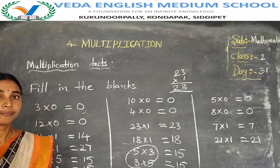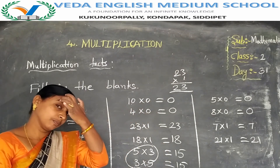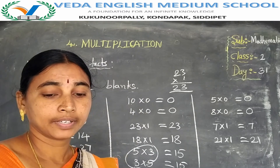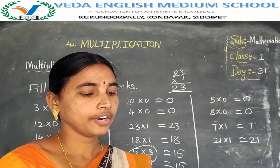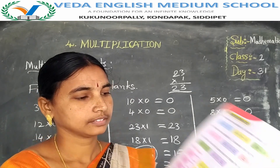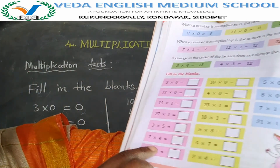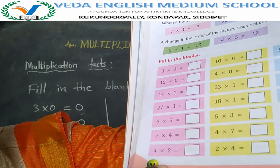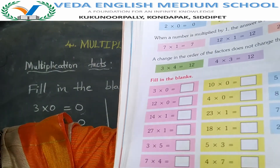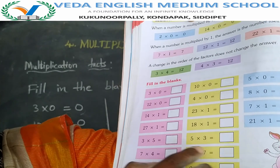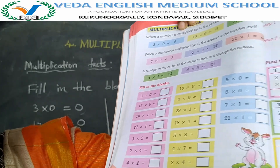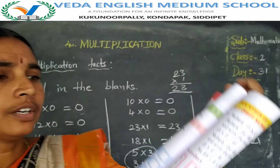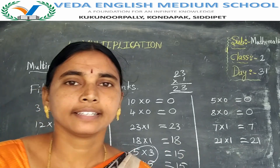Understood? Multiplication facts: the fact of multiplied by 0, the fact of multiplied by 1, and the third one is the order change. Okay, the remaining problems are on page number 54 — that is your homework: problems 1, 2, 3, and 4. Okay? Bye, children.